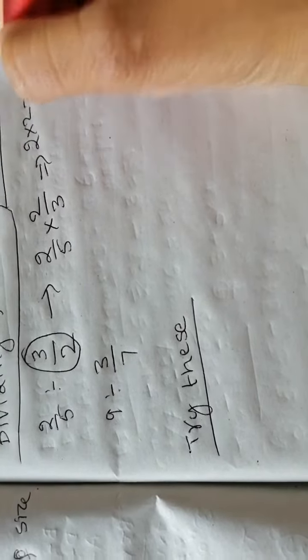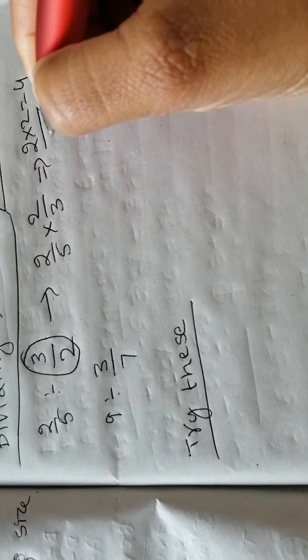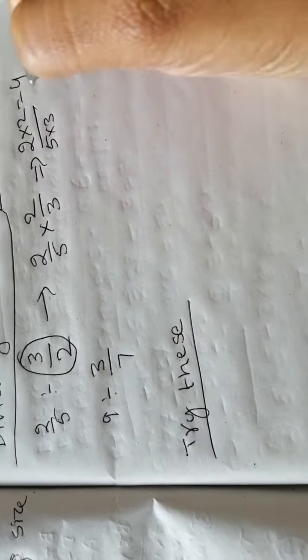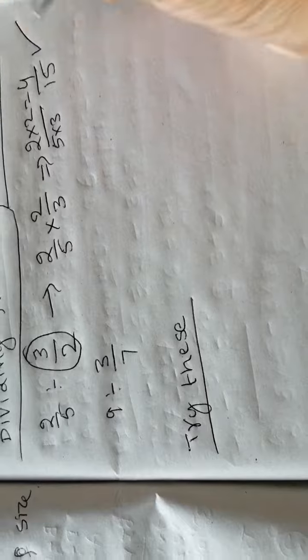So 2 times 2 equals 4, 5 times 3 equals 15. So 4 over 15 is our answer.